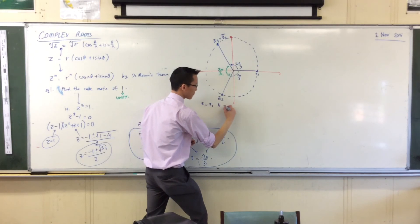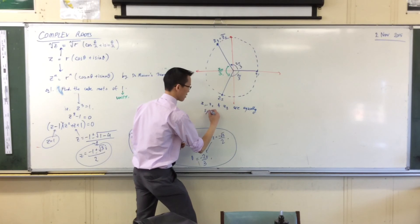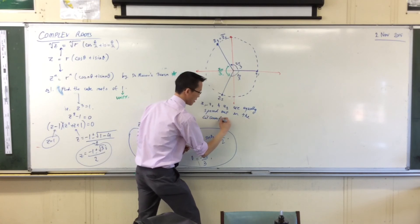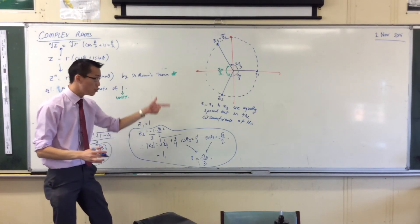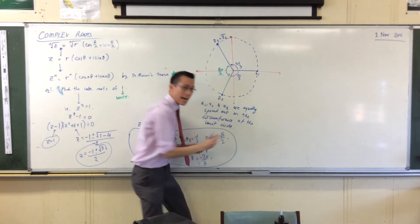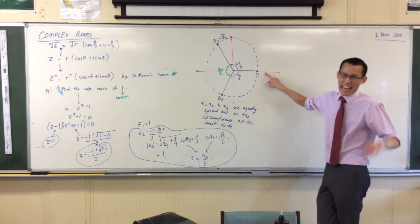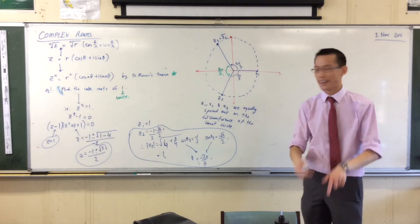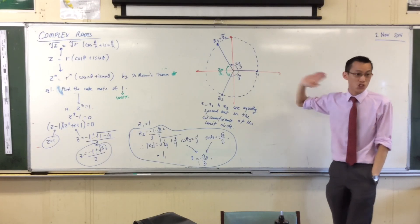When you think about this and you think geometrically about what it means to cube these complex numbers, you can see it has to be that way. Let's think about the first solution. That's just 1. Not very interesting. When you cube 1, 1 times 1 is 1, and then 1 times 1 times 1 is still 1. That's the multiplicative identity. You just multiply it by itself and it just stays put.